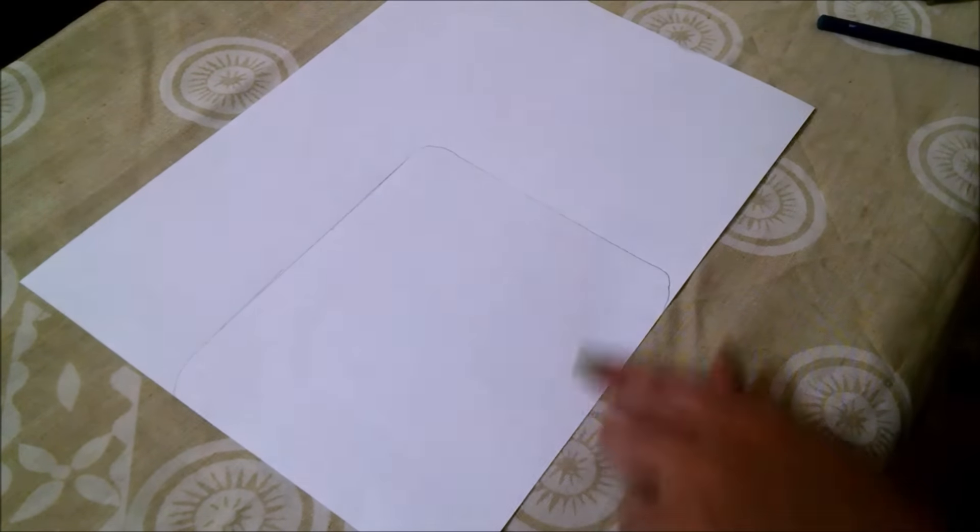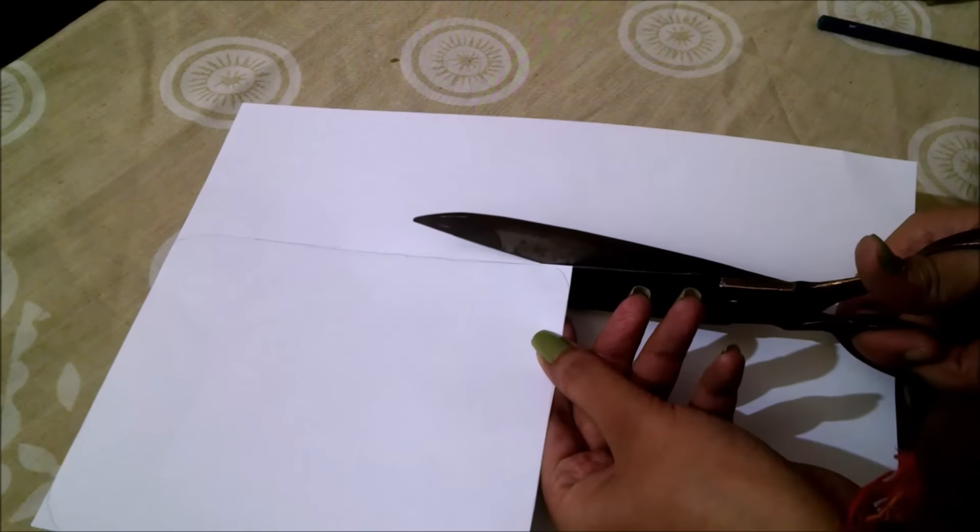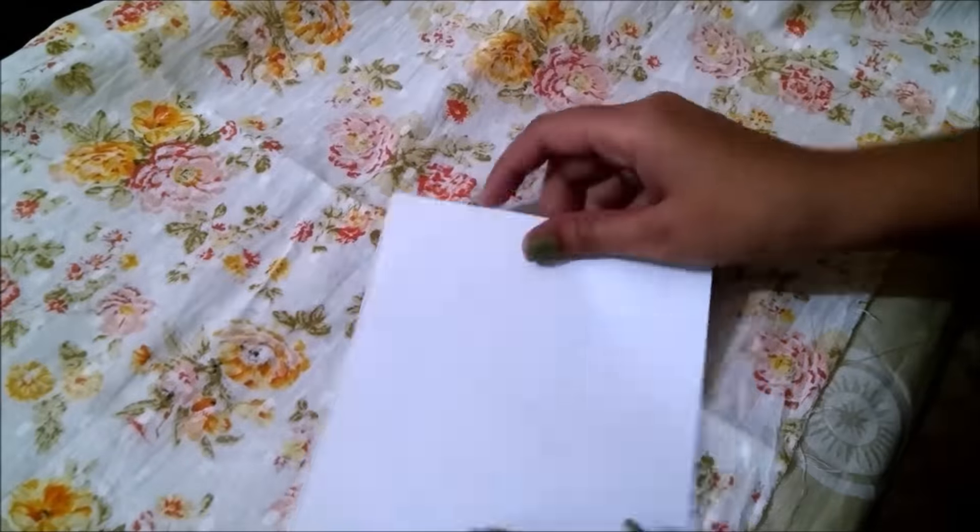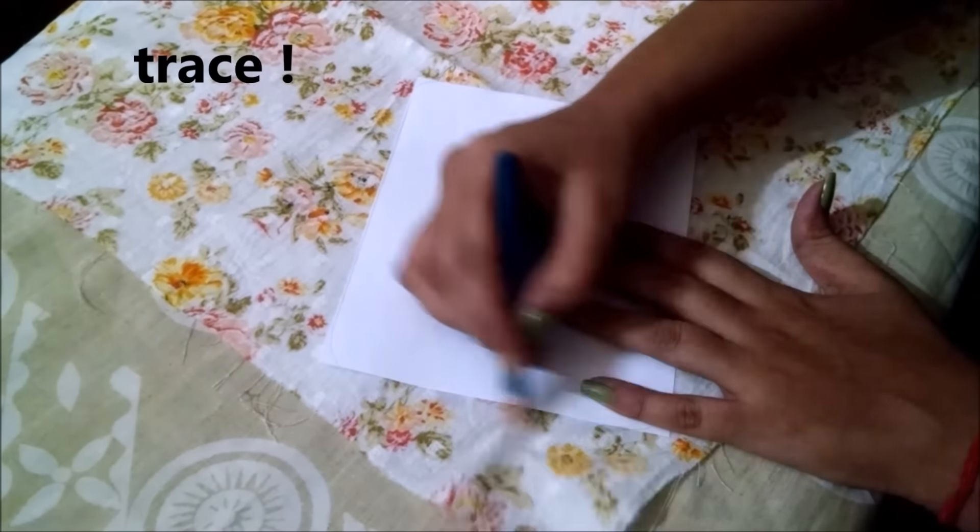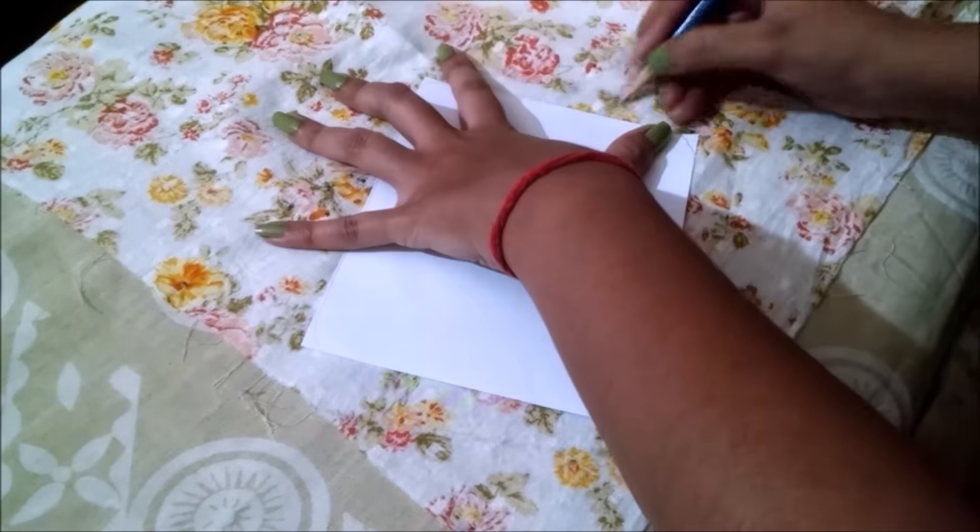Now trace the cardboard template on white A4 sheet and cut it out. Now place it on the cloth of your choice and trace accordingly by leaving 1cm extra and cut it.